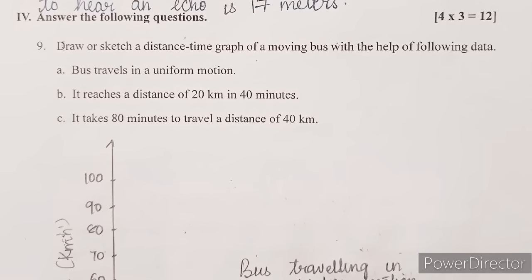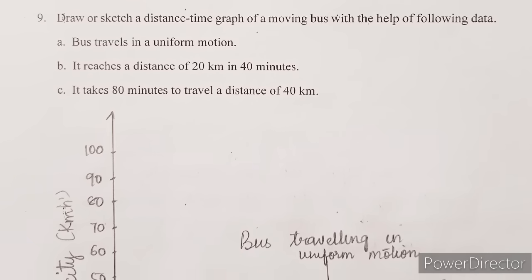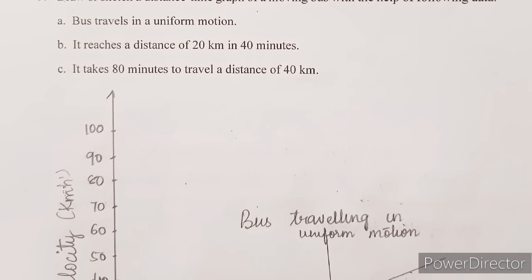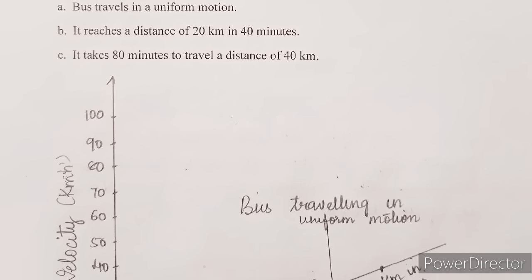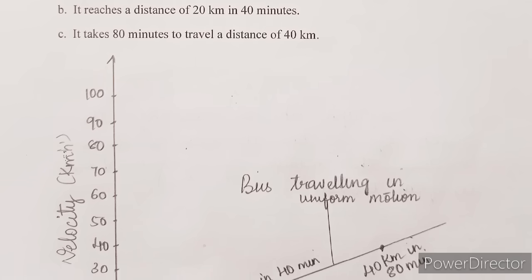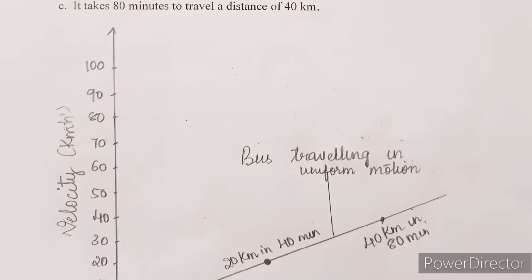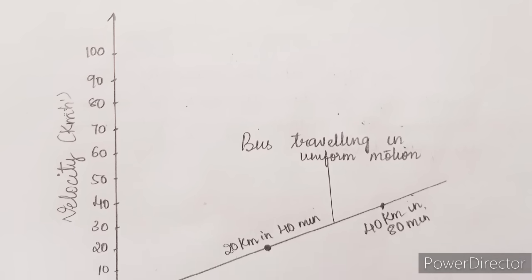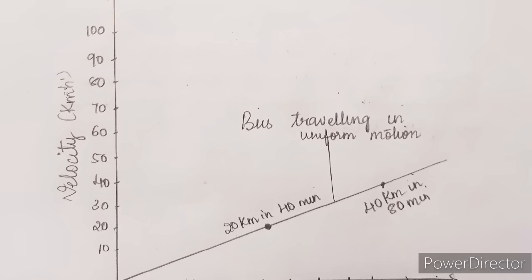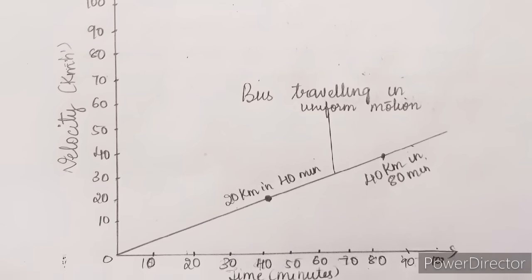Next main: answer the following questions, each carrying four marks — three questions, total 12 marks. Question: draw or sketch a distance-time graph of a moving bus with the help of the following data: (A) bus travels in uniform motion, (B) it reaches a distance of 20 km in 40 minutes, (C) it takes 80 minutes to travel a distance of 40 km. Everything is mentioned in this graph — you can refer to it.